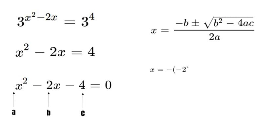We have x is equal to minus negative 2 plus or minus the square root of negative 2 squared minus 4 times 1 times negative 4 over 2 times 1.